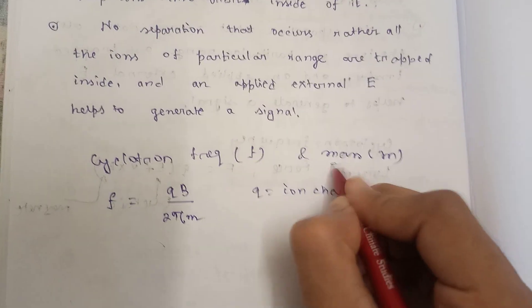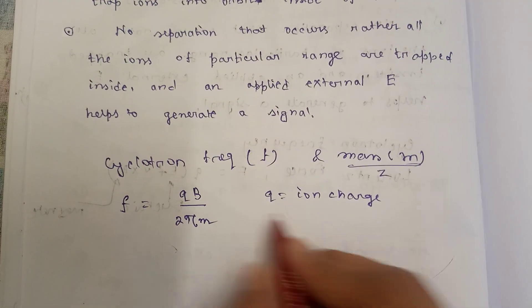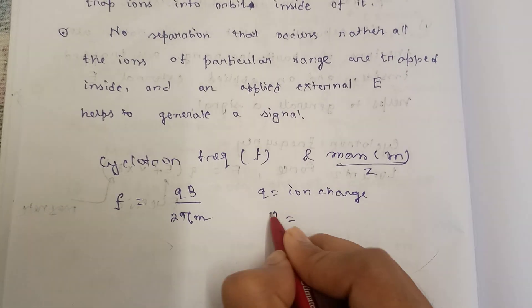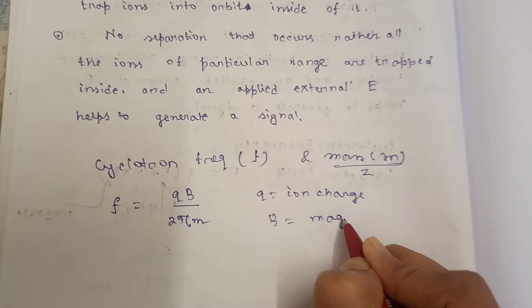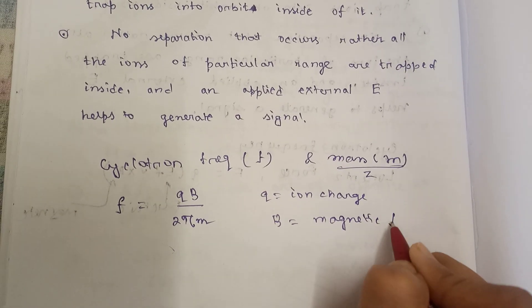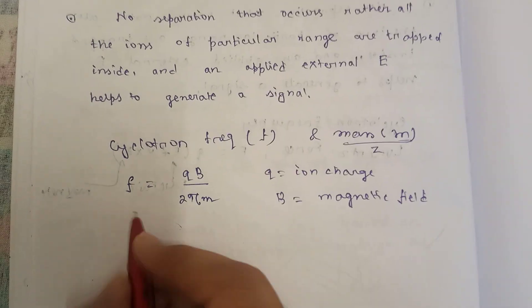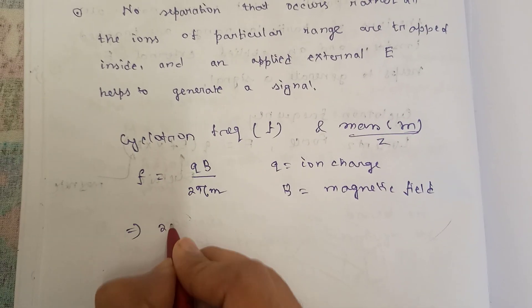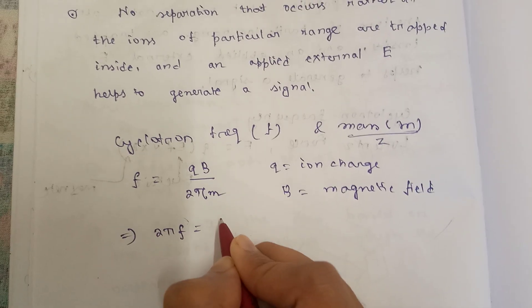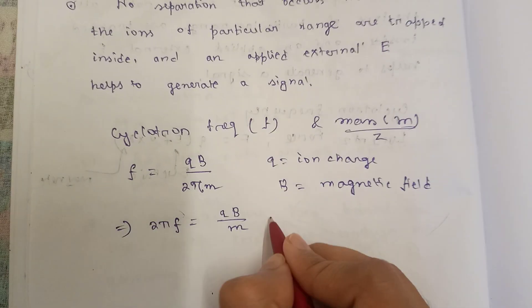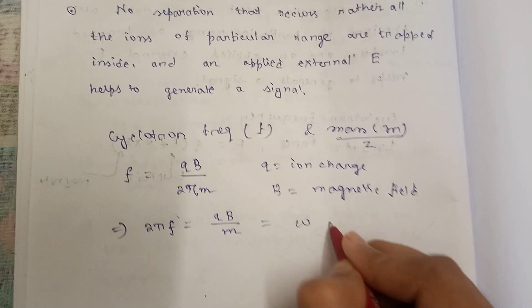Or you can express the relation as m/z, where m is the mass and B is the magnetic field. From here you can get 2πf = qB/m, which is the vibrational or angular frequency.